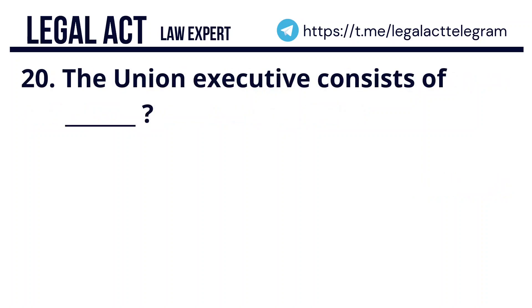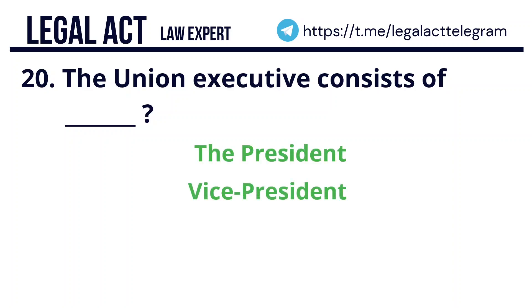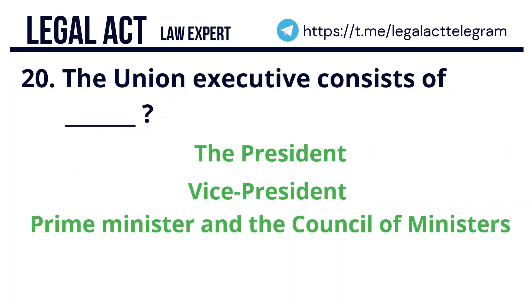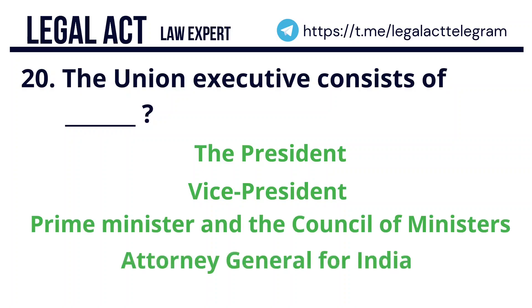Question 20: The Union Executive consists of the President, Vice President, Prime Minister and the Council of Ministers, and the Attorney General of India.